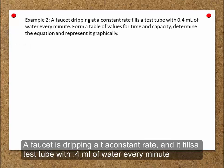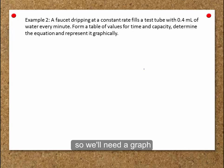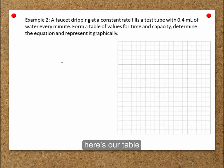Here's another example. A faucet is dripping at a constant rate and it fills a test tube with 0.4 milliliters of water every minute. We're going to form a table of values for time and capacity and then determine an equation and represent it graphically. So we'll need a graph.